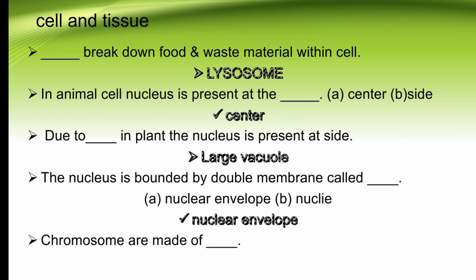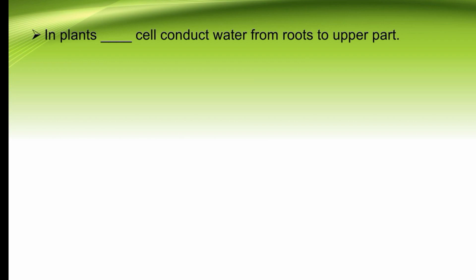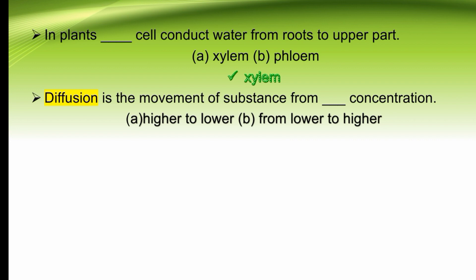Chromosomes are made of DNA and protein. In plants, dash conducts water from roots to the upper parts — xylem or phloem. The right option is xylem. Xylem is responsible for conducting water from roots to upper parts. The right option is A. Diffusion is the movement of substance from dash concentration — higher to lower or lower to higher. Diffusion is the movement of substance from higher to lower concentration. The right option is A.